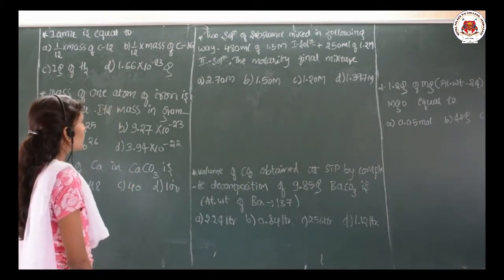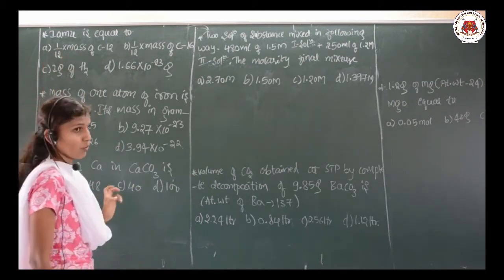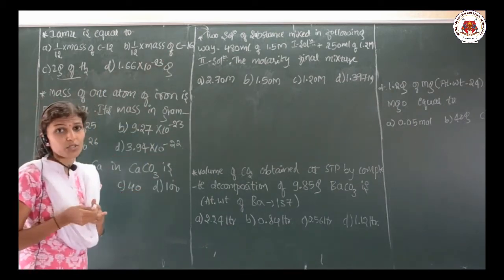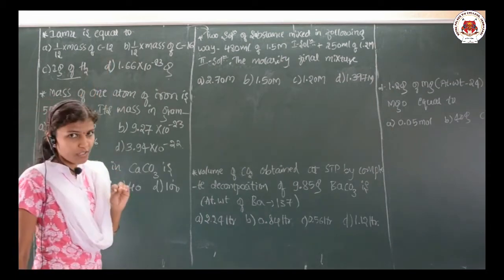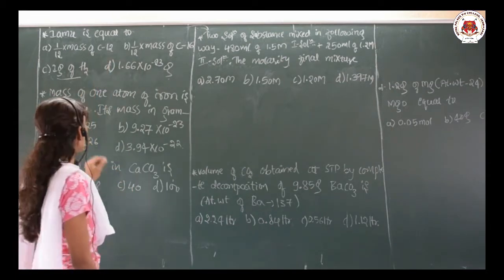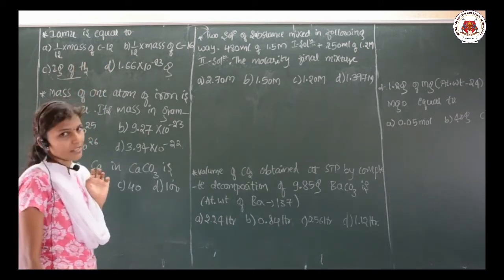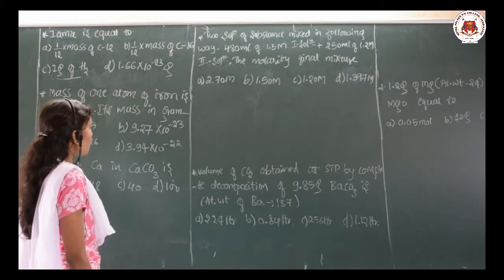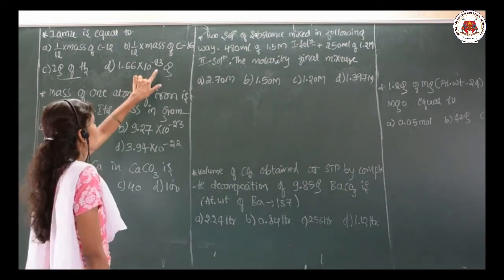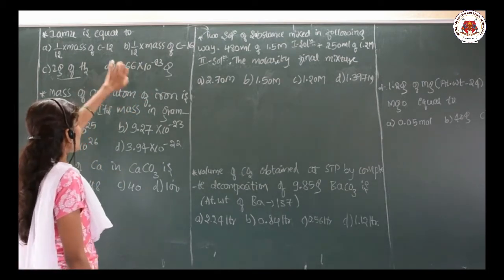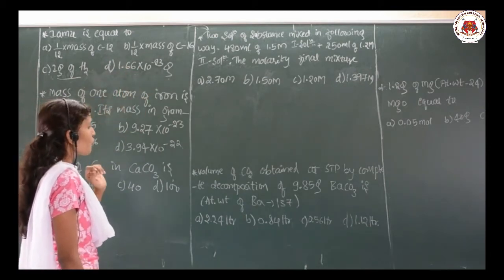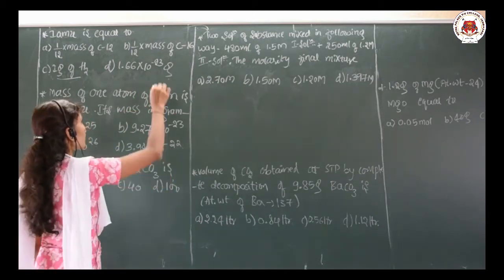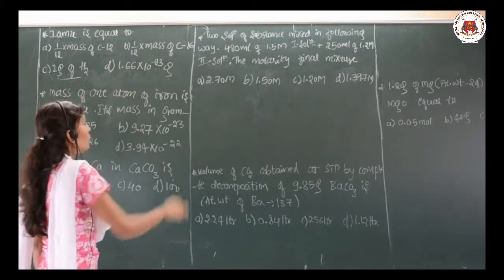The question is: what is 1 amu equal to? We are going to eliminate option (b) and option (c) because we take carbon-12 as the standard reference. So 1/12th mass of carbon-12 is the correct answer according to the given choices. There is also option (d), which is nearly the 1 amu value, but the exponent must be 10⁻²⁴, not 10⁻²³ as given — so that option must be eliminated.